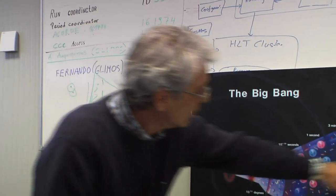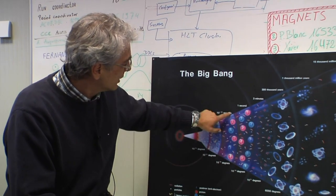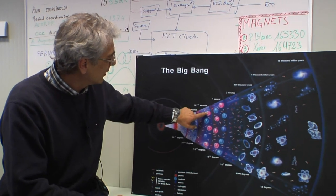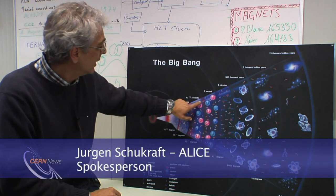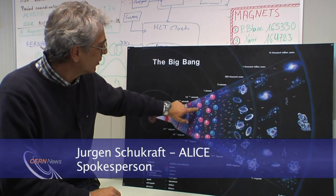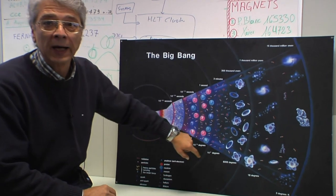The Big Bang starts here, today we are here. What we want to study is this region, the first time that the universe did not consist only of elementary objects, but when these elementary objects coalesced into combined objects: hadrons, neutrons, and later on nuclei.